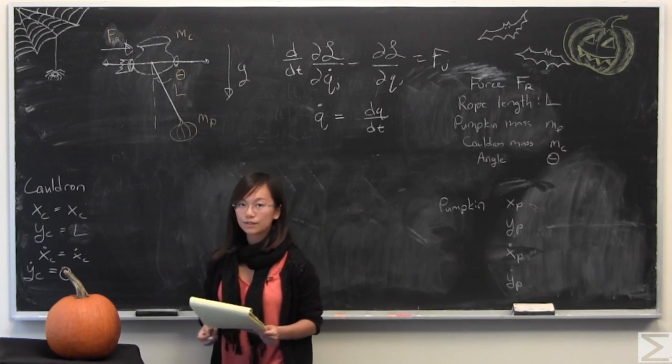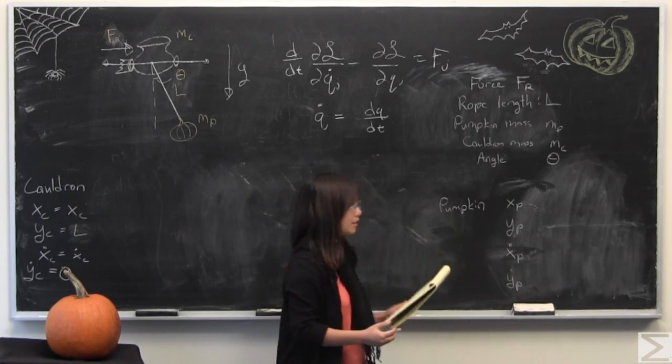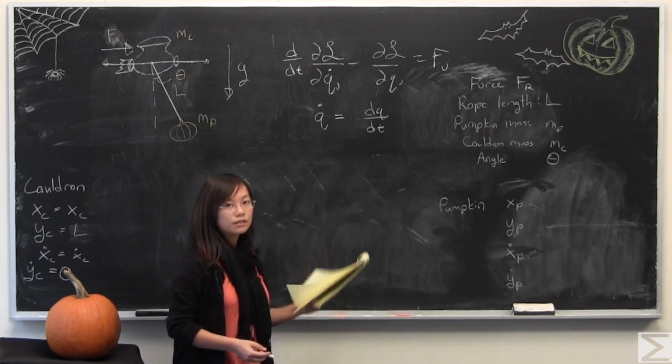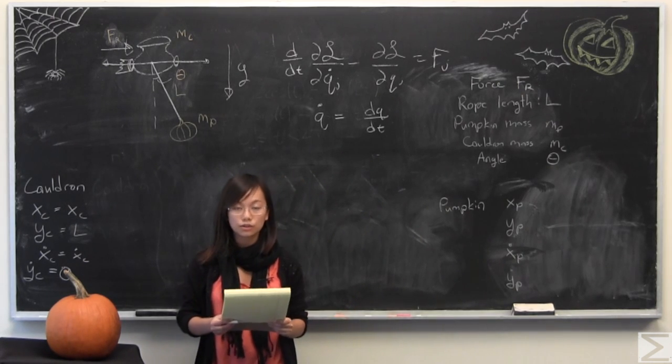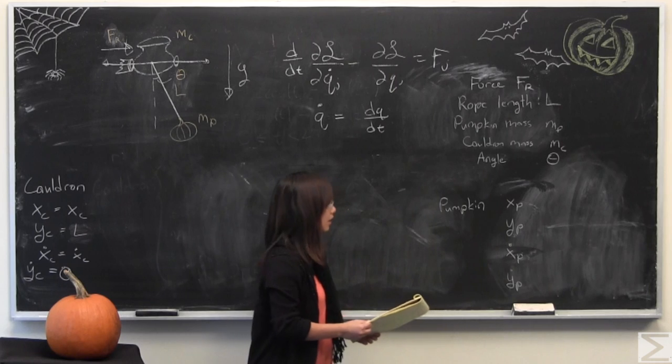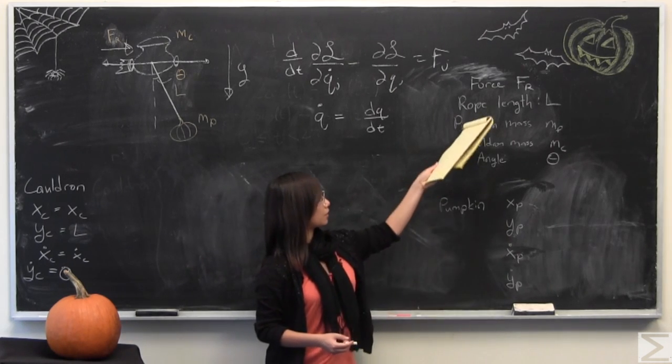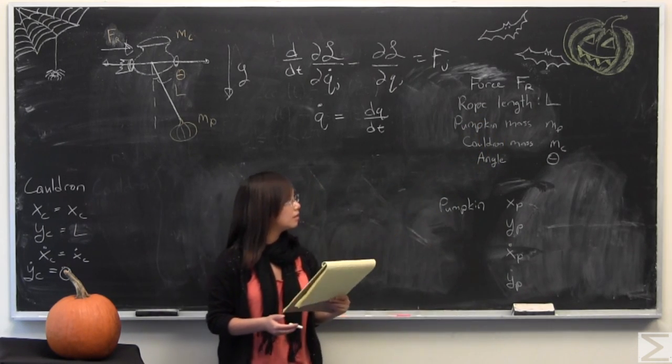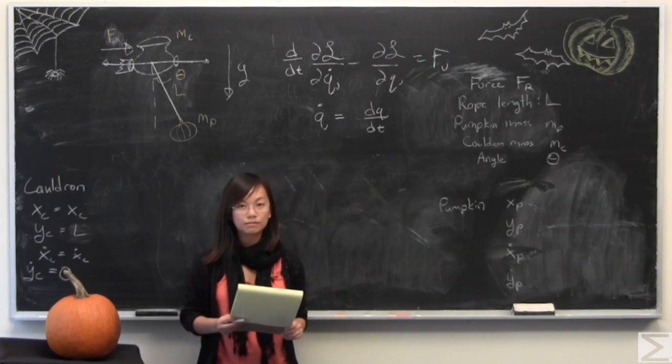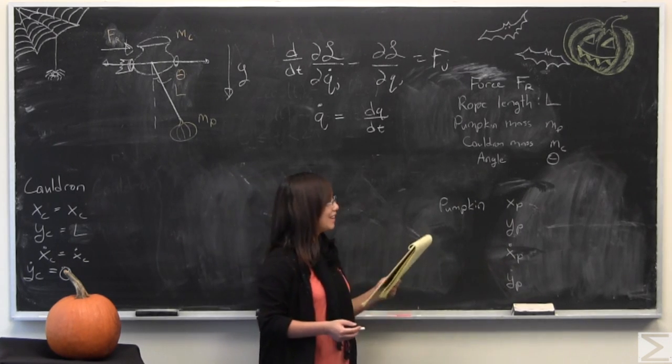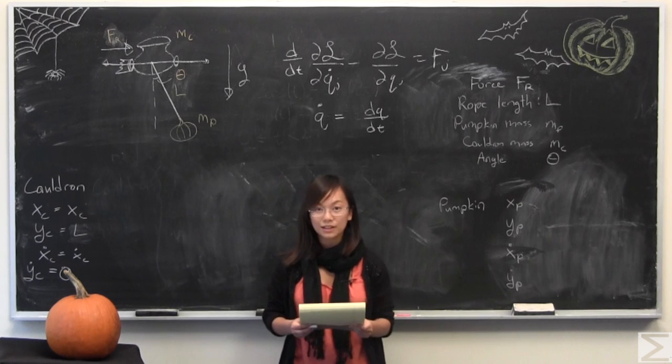Its velocity I've described as xc dot, and as you can see up here, the dot means the total derivative with respect to time. In addition, we have force FR, rope length L, pumpkin mass MP, cauldron mass MC, and the pumpkin is swinging at an angle.